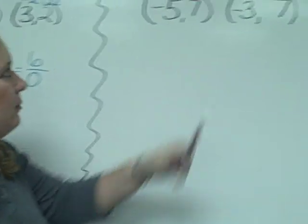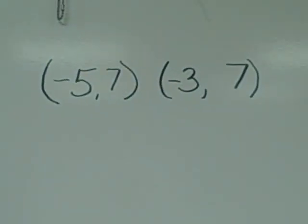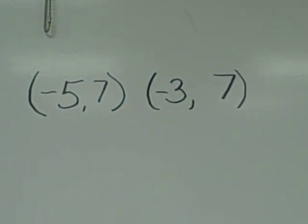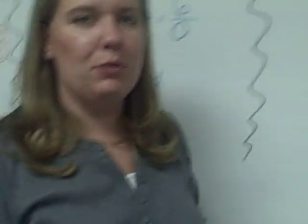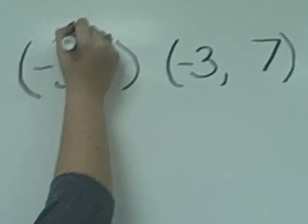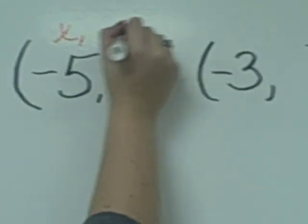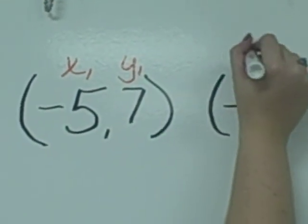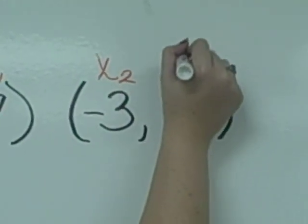Over here we have our final example, negative 5, 7, and negative 3, 7. Go through the same process again with these two ordered pairs. x1 and y1, x2 and y2.